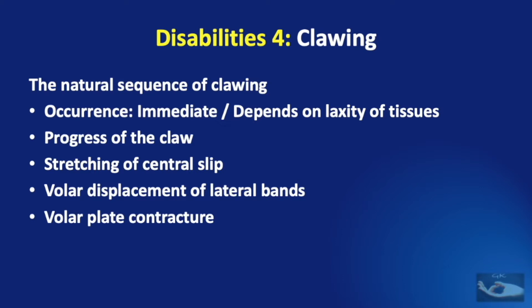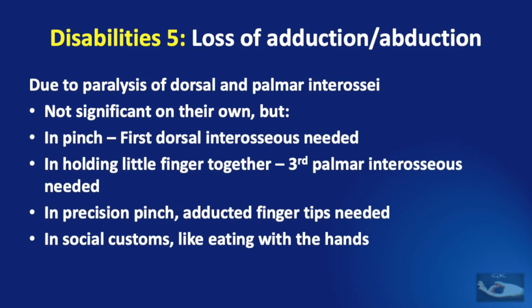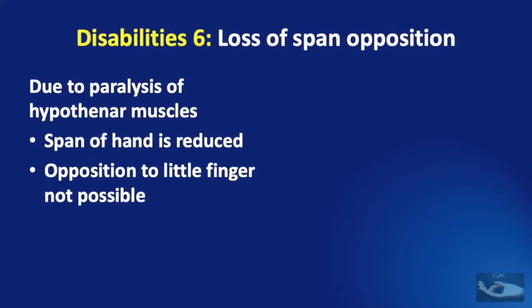The fifth disability is the loss of adduction and abduction of the fingers due to paralysis of the dorsal and palmar interossei. While not very significant on its own, it contributes to four important functional deficits: in pinch (requiring the first dorsal interosseous), in holding the little finger with the other fingers (requiring the third palmar interosseous), in precision pinch where adducted fingertips are needed, and in social customs such as eating with the hands where all fingertips must come together. The sixth disability is the loss of span opposition — due to paralysis of the hypothenar muscles, the span of the hand is reduced and opposition to the little finger is not possible.